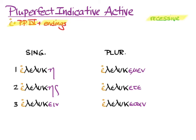Now, recessive accent. We look at the last syllable of the word. We can see that it's long, and we count back one, two, and put an acute over the second to last. Again, we get long, so we go back one, two, and we have an acute over the penult. Long, one, two — acute over the second to last.